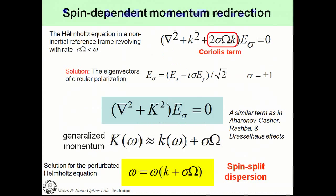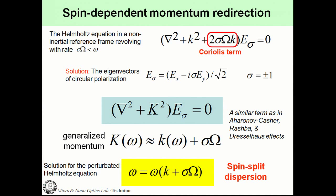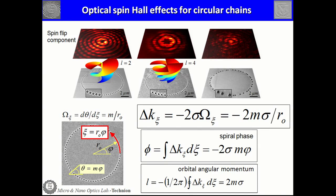The Helmholtz equation in a non-inertial reference frame rotating with rate omega includes an additional Coriolis term proportional to omega, where the eigenvectors are the spin states. We can write a generalized momentum where the generalized momentum k equals the unperturbed k plus sigma times omega. The dispersion solution is a spin-split dispersion: omega as a function of k plus sigma times omega.